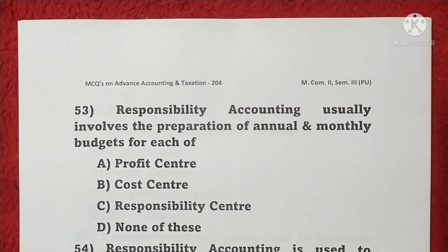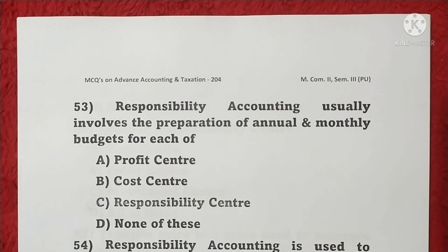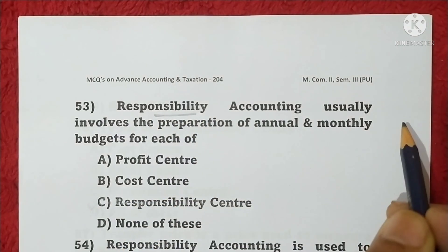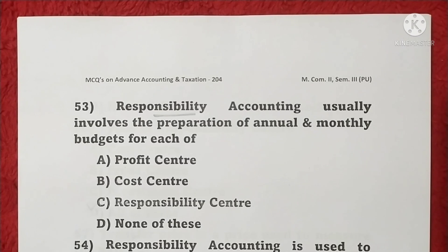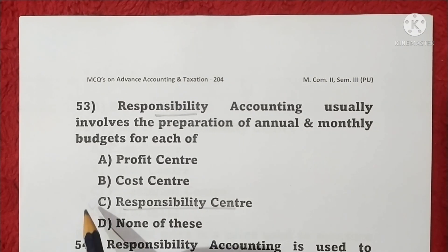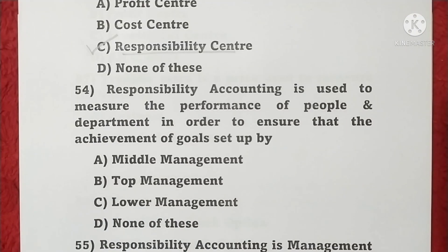Here we are going to discuss the multiple choice questions on Advanced Accounting Taxation Paper 204, Income, Second Year Pune University. This is the second part. Question 53: Responsibility accounting usually involves preparation of annual and monthly budget for each responsibility center — option C is correct. Question 54: Responsible accounting is used to measure the performance of people and departments — option B is correct.